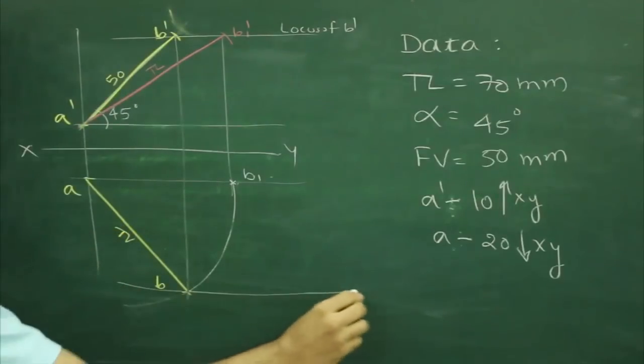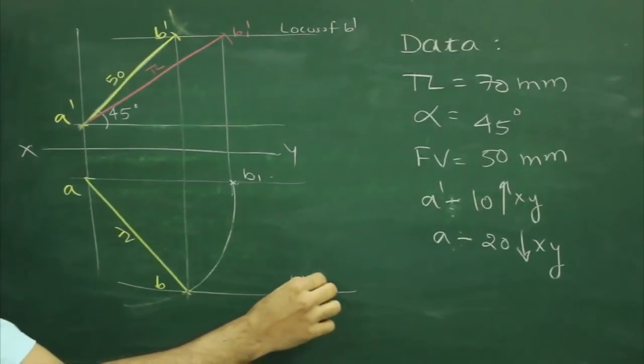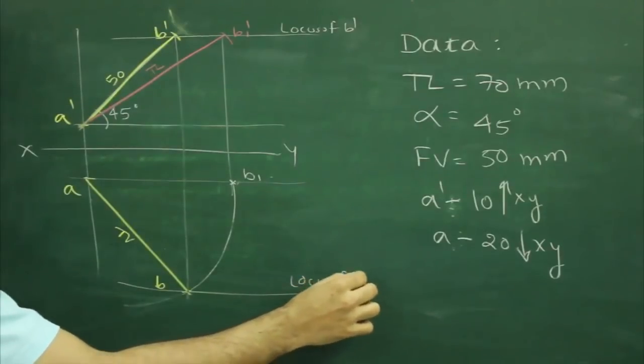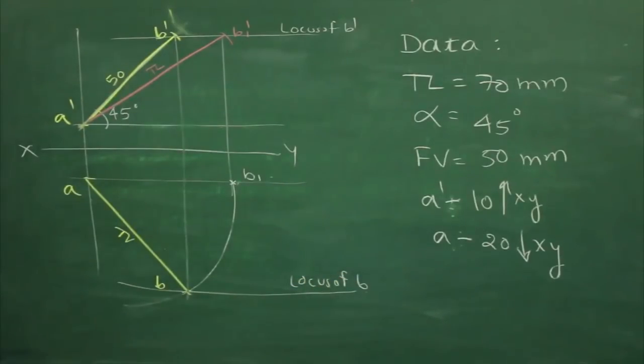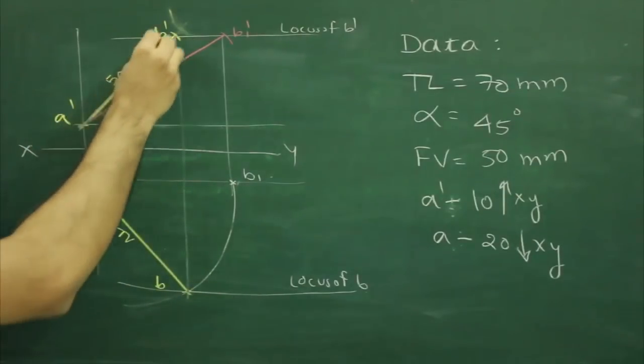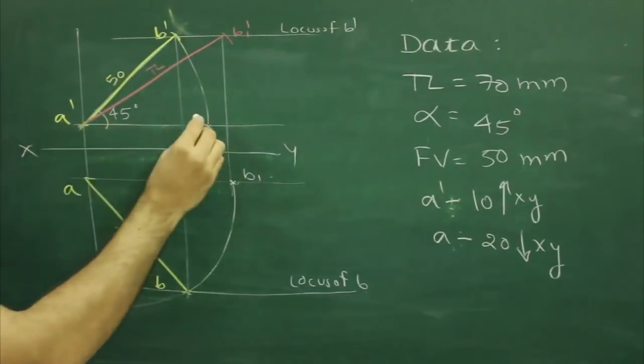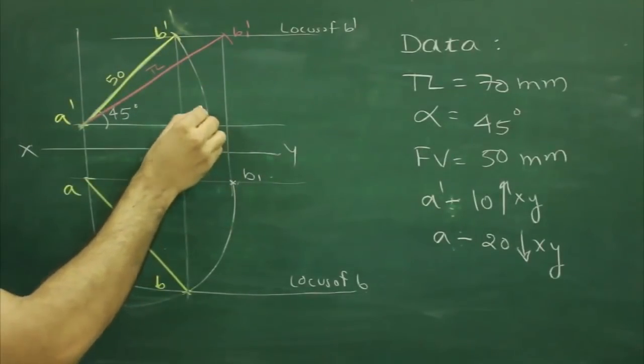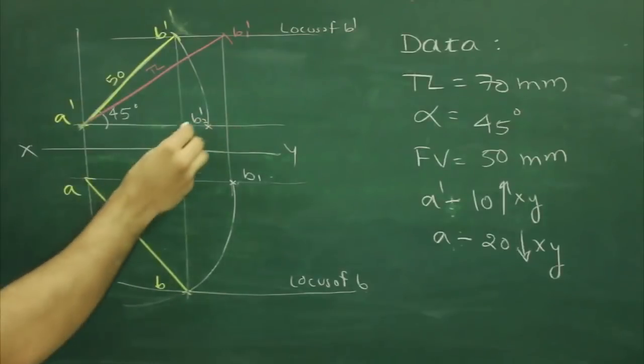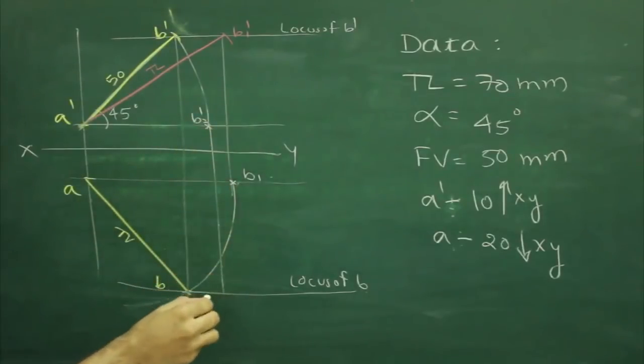Then we will draw locus from B. Then we can take true length and we can cut directly over here, or we can rotate A dash B dash till horizontal line. We will mark that point as B2 dash. We will project this line straight down. Wherever it will cut the locus of B, that point would be B2.